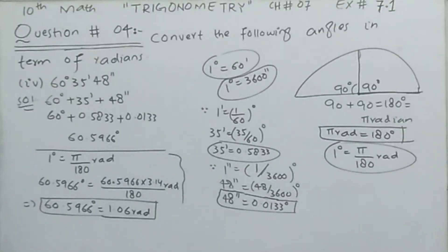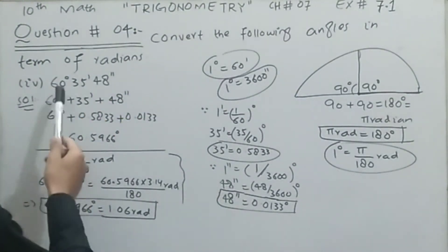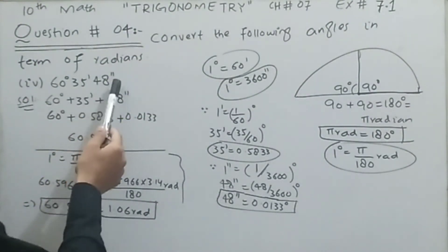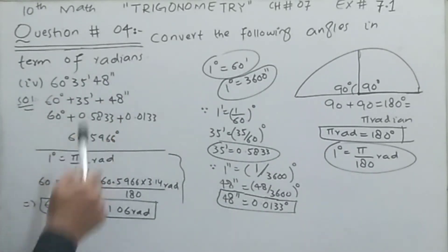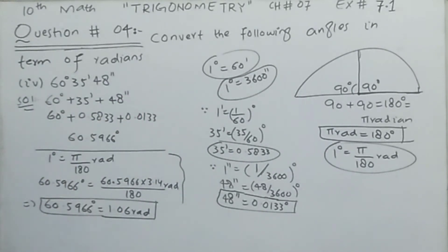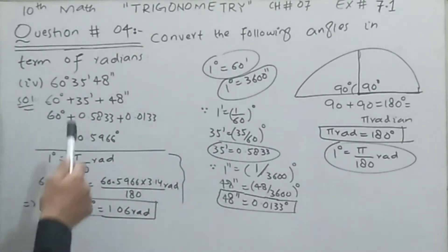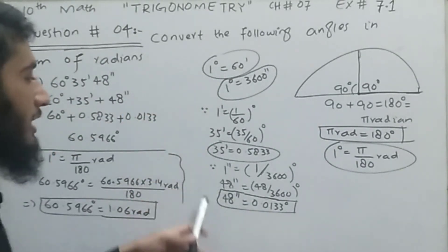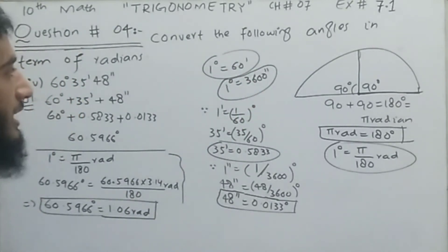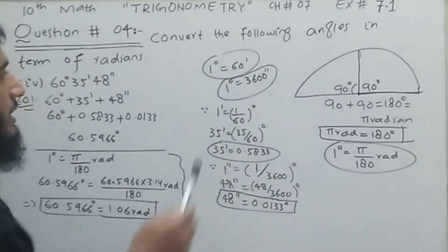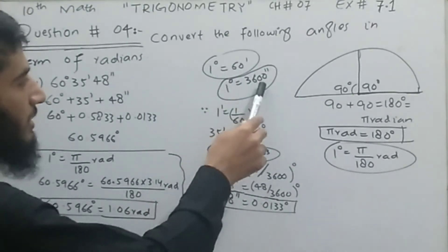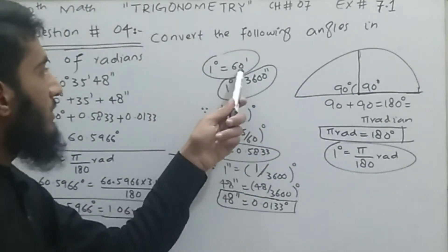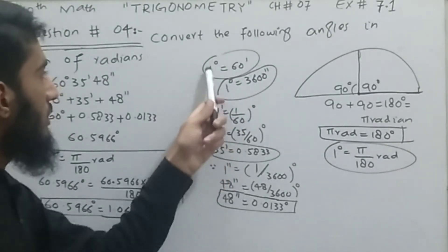Now the last part of question number four: convert 60 degrees 35 minutes 48 seconds in terms of radian. We cannot convert DMS directly to radian because we need the angle purely in degrees. We will use the conversions learned in question number one: one degree equals 60 minutes and one degree equals 3600 seconds.